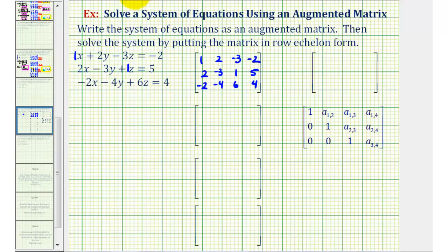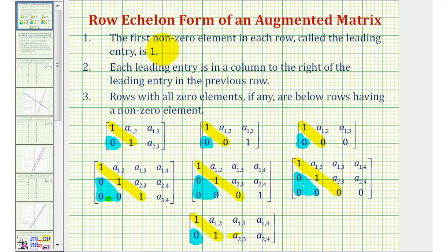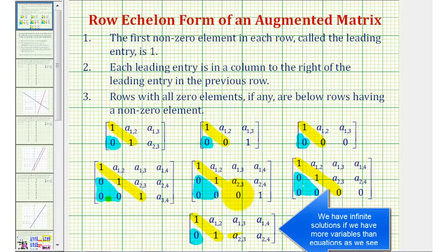Now to write this in row echelon form, let's review the specifics. The first non-zero element in each row, called the leading entry, must be one. Each leading entry is in a column to the right of the leading entry in the previous row, and rows with all zero elements, if any, are below rows having a non-zero element. Looking at examples of matrices in row echelon form, notice how the main diagonal often consists only of ones, though it can contain a zero if we have infinite or no solutions, and all elements below the main diagonal must be zero.